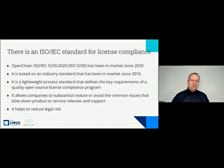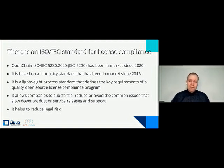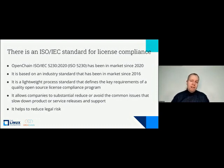The OpenChain project has two standards. The first, and most well-known, is an ISO standard: OpenChain ISO/IEC 5230:2020 — normally shortened to ISO 5230. It's been in market as an ISO standard since 2020 and has been out there as a de facto industry standard since 2016. It is designed to help people address open source license compliance.